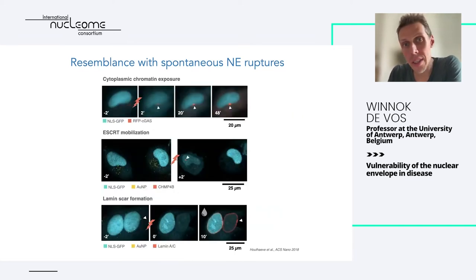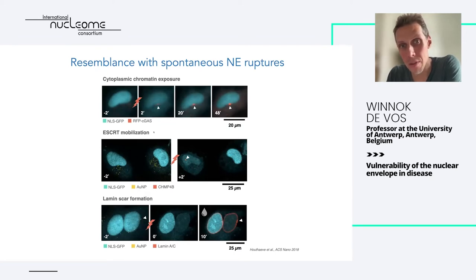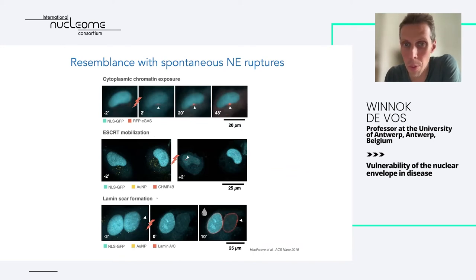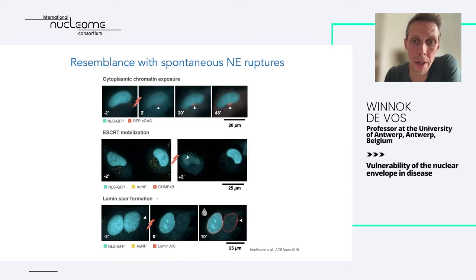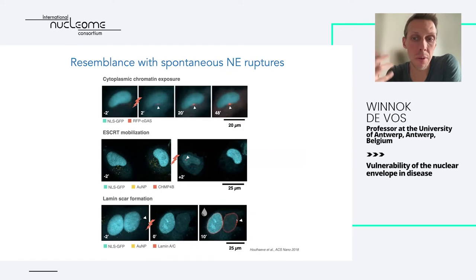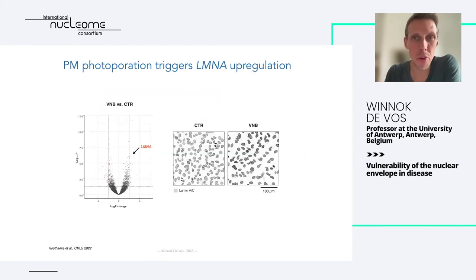Despite the low efficiency, we could observe many typical rupture features when inducing photo-poration ruptures: mobilization of cGAS (which recognizes cytoplasmic DNA), mobilization of CHMP4B (responsible for nuclear envelope repair), and even a lamin scar — the damage mark left after the rupture event.